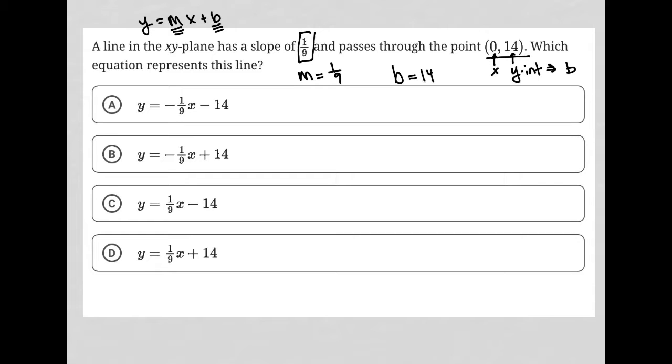So all we're doing is plugging these numbers into those variables. So this will end up being y equals 1/9th x plus 14. The question says which equation represents this line? We just found it and that is choice D.